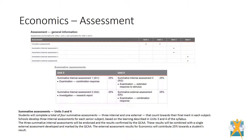As with all general syllabus subjects, assessments are formative in Units 1 and 2 and summative in Units 3 and 4. Students will complete a total of four summative assessments, three of which will be designed and marked by the staff of Chancellor State College and are worth 75% in total, and one external exam which will be developed and marked by the QCAA. This external exam is worth 25% of the total mark and will cover Units 3 and 4.